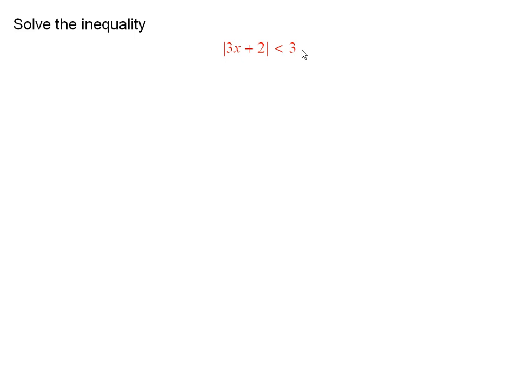I want to solve this inequality. What does this say? This says that you have this expression 3x plus 2 and it is closer to 0 than 3. How can you express that in symbols getting rid of the absolute value?